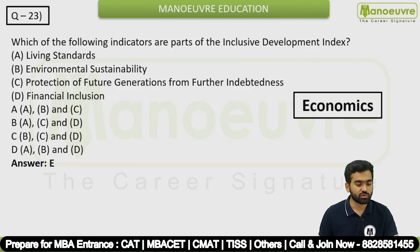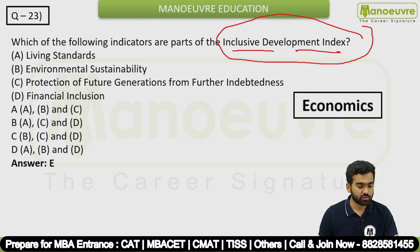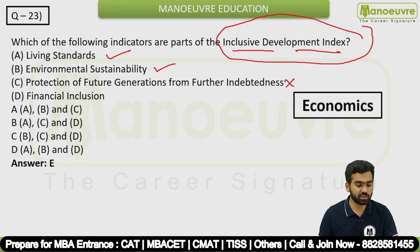Question 23: Which of the following indicators are part of the Inclusive Development Index? This is an economics question. The Inclusive Development Index includes living standard, environmental stability, and financial inclusion. It does NOT include protection of future generation from further indebtedness. So options A, B, and D are correct — answer is option D.